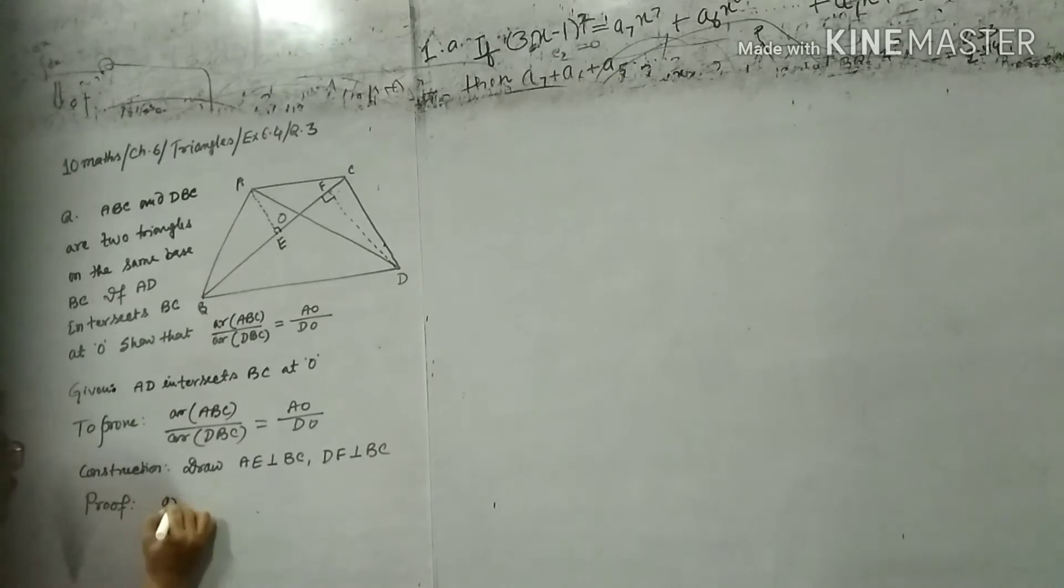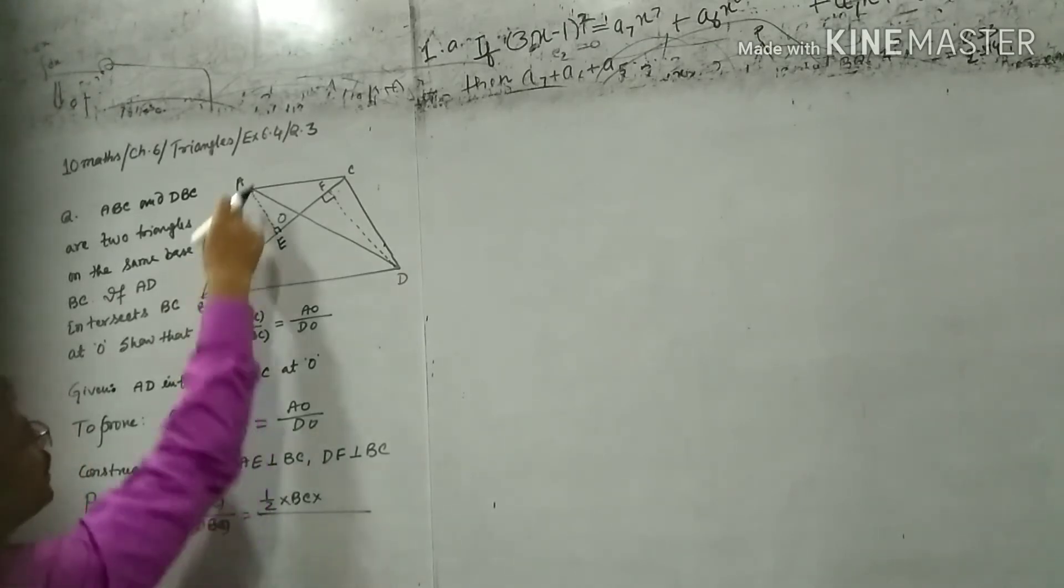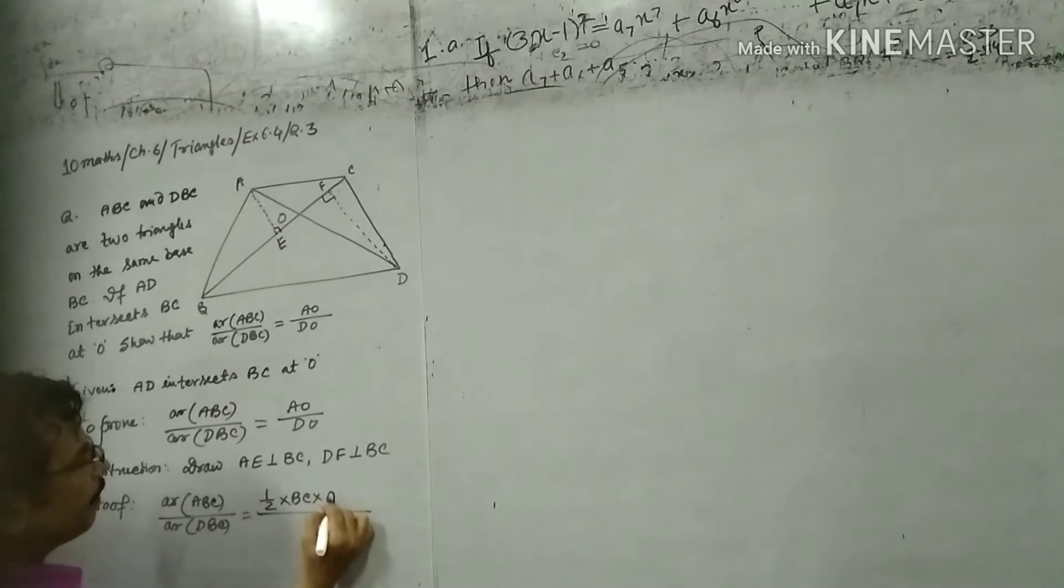Area ABC upon area DBC. Half BC into AE, that is ABC. Half BC into DF.